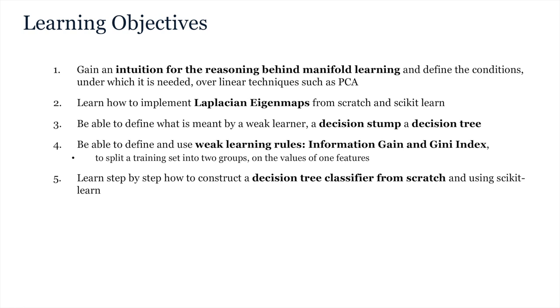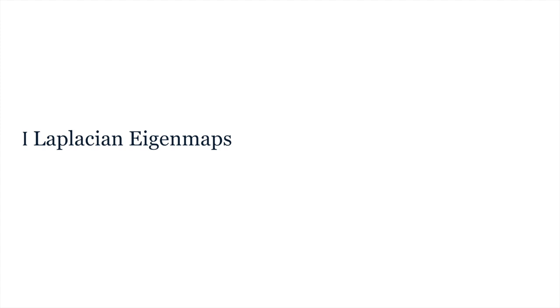In the second part of the week we will define what is meant by weak learners and look in detail at decision stumps and trees. You will be expected to be able to calculate and implement the weak learning rules information gain and Gini index by hand. And the end goal of this week's tutorials will be that you can implement a decision tree algorithm from scratch in Python. As always, we will also learn how to implement both methods in scikit-learn. Let's get started with Laplacian eigenmaps.